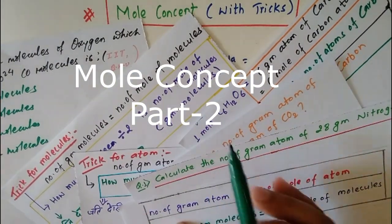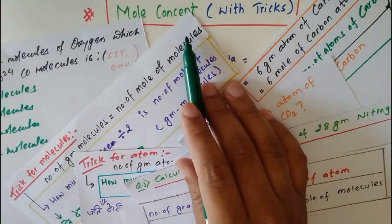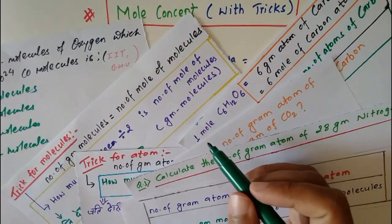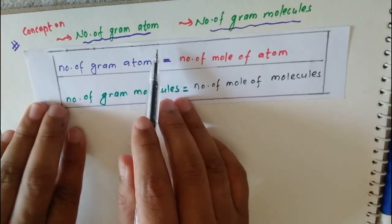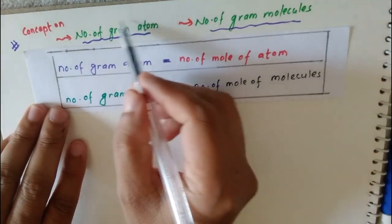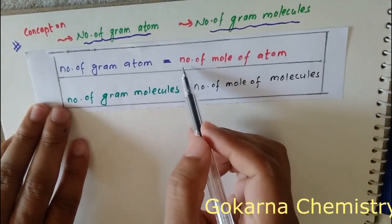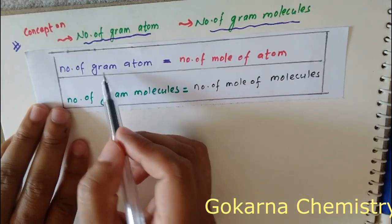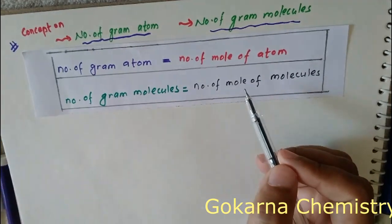Hello students, today I am going to help you understand gram atom and gram molecule concepts. To learn the basic mole concept, watch my earlier video. I will also help you gain conceptual understanding for related numericals in this video. Let us start from number of gram atoms. Number of gram atoms is for atoms, and number of gram molecules is for molecules. Number of gram atoms means number of moles of atoms, and gram molecules means moles of molecules.